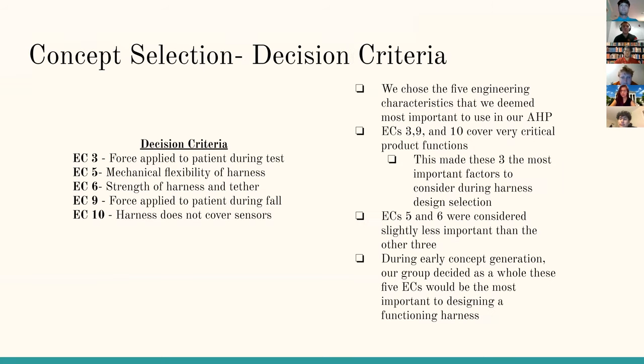Of our five design concepts, we ended up using the AHP chart. We were able to determine the three most critical engineering characteristics: the forces applied to the patient during the test, the forces applied to a patient during the fall, and that the harness doesn't cover the sensors.